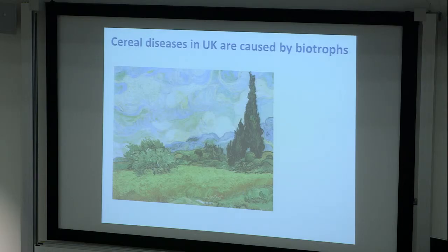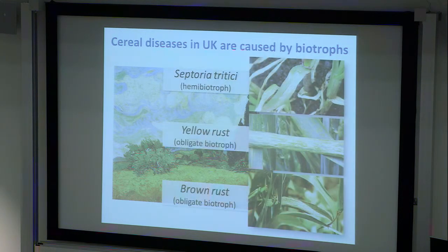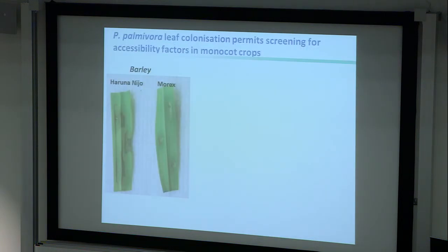More recently we're moving into studying crops relevant to the UK. Most pathogens causing diseases in the UK have biotrophic phases, making lab infections difficult — they have to be carried out on whole plants. That's why we'd like a system where we can screen many varieties very quickly.